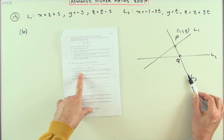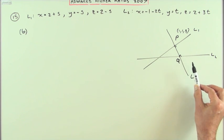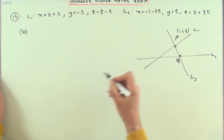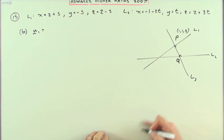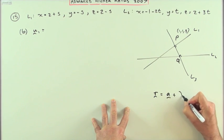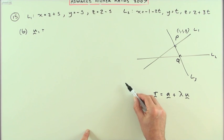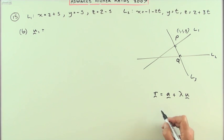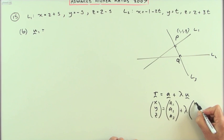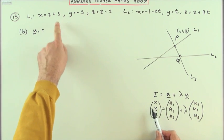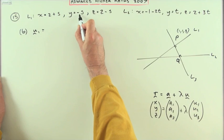Part B: line L3 passes through the point (1, 1, 3) and is perpendicular to both L1 and L2 — find its parametric equations. Since it's perpendicular to both, we use the vector product of the direction vectors of L1 and L2. Call these u1 and u2; you can read them directly from the equations, since the direction vector is whatever the parameter multiplies. So u1 = (1, −1, −1) and u2 = (−2, 1, 3).